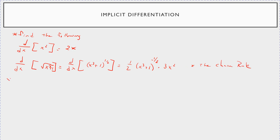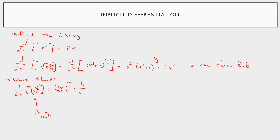But now notice: what if I say find the derivative with respect to x of y squared? Notice how here the dx and x are different now. So what you would do is chain rule this. You take the 2, bring it down, treat the y as the inside and leave that alone — the 2 becomes 2 minus 1 — and then what's the derivative of the inside? Well, what's the derivative of y with respect to x? That's just dy/dx.